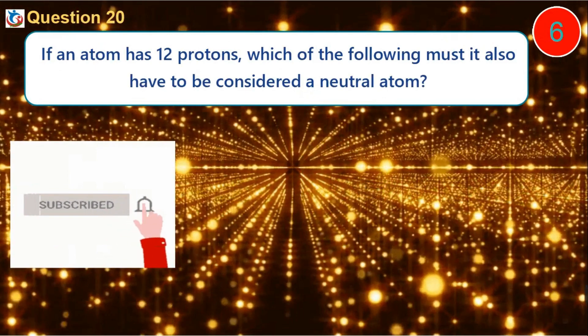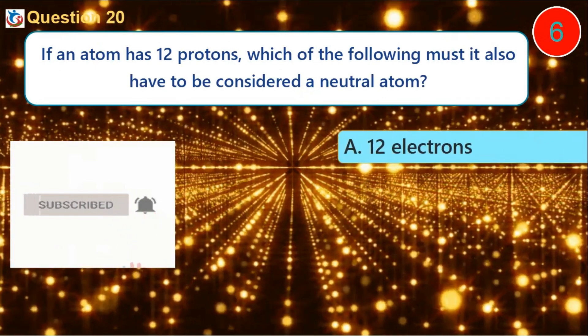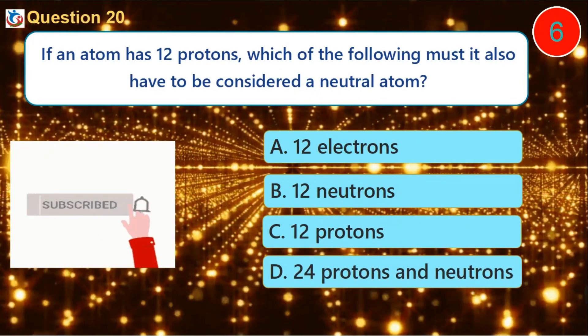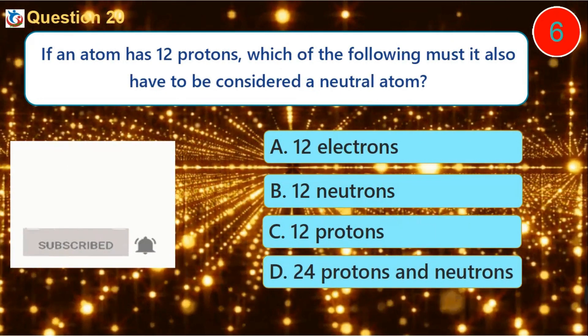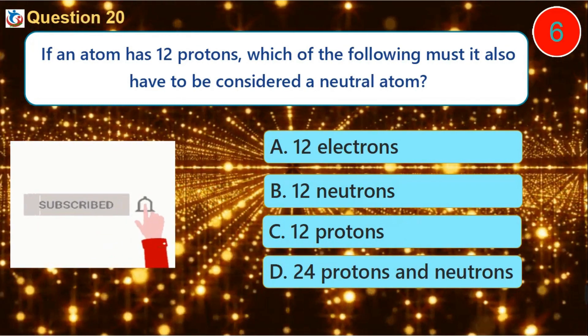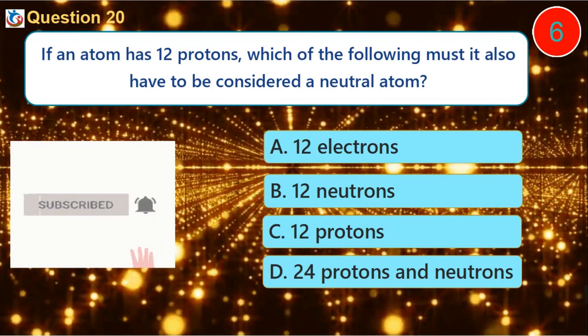Question 20. If an atom has 12 protons, which of the following must it also have to be considered a neutral atom? A. 12 electrons B. 12 neutrons C. 12 protons D. 24 protons and neutrons